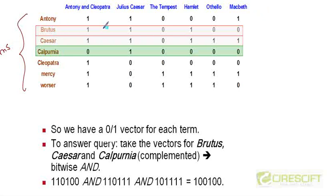So the term Brutus for example can be thought of as a bit vector 1 1 0 1 0 0. So this bit vector records in which place the word Brutus appeared or did not appear. The vector for Caesar is 1 1 0 1 1.